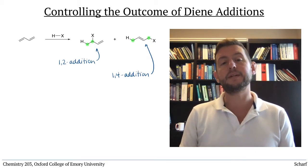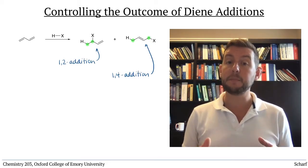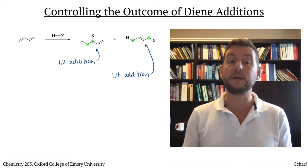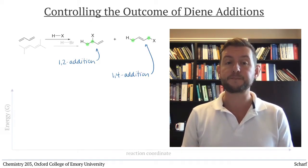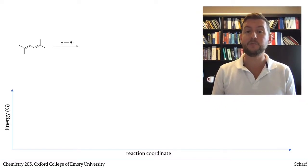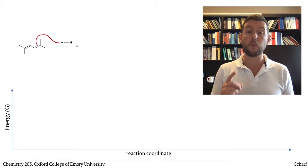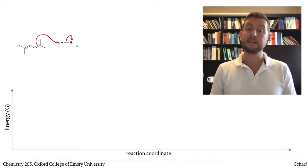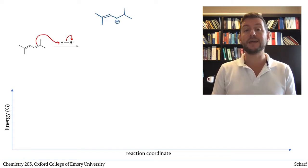Let's work through an example to illustrate this, keeping track of the reaction coordinate diagram as we go. In the reaction of 2,5-dimethyl-2,4-hexadiene with HBr, initial protonation occurs at one of the ends of the diene, like this, producing a resonance-stabilized carbocation.